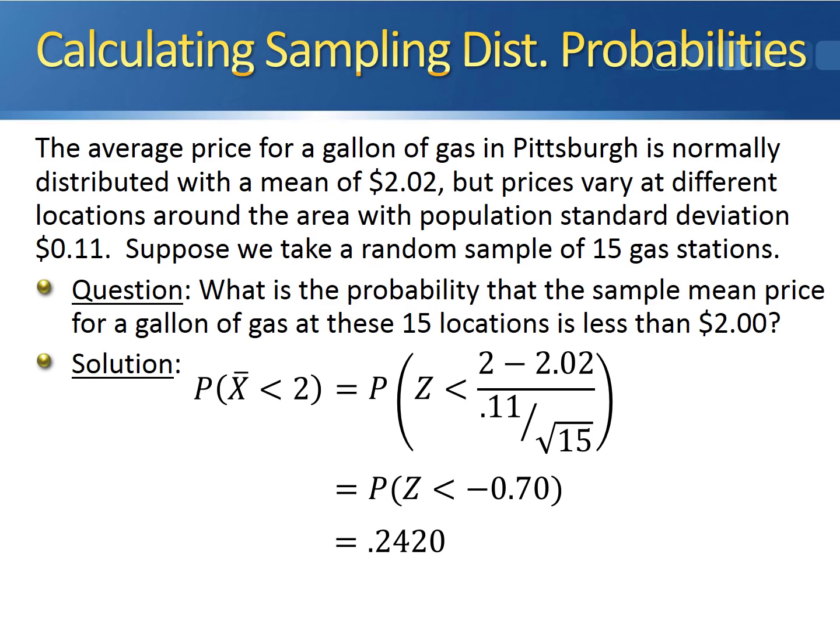This tells us that the probability that the sample mean gas price of the 15 selected locations is less than $2 is equal to 0.2420.